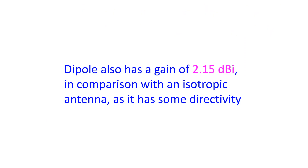As it is a relative unit, while mentioning dB, the standard to which it is compared has to be known. In the case of antenna gain, it is often mentioned as dBi, or gain with respect to an isotropic antenna. An isotropic antenna is a theoretical antenna which radiates uniformly in all directions in a spherical form.